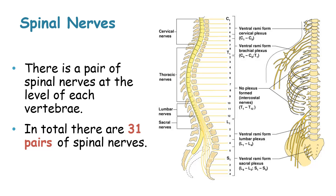Then lastly, looking at the spinal nerves, there is a pair of spinal nerves at the level of each vertebra, and these pairs sum to 31 pairs of spinal nerves.